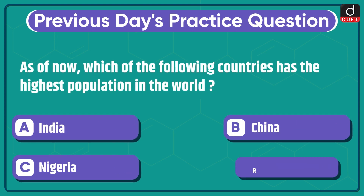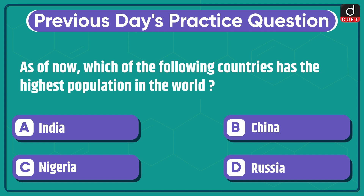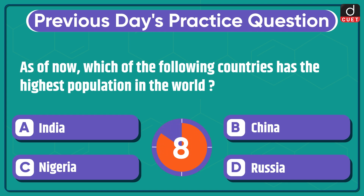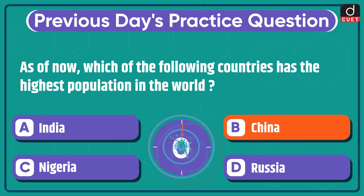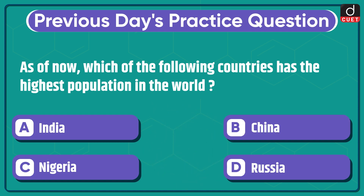The question was: as of now, which of the following countries has the highest population in the world? India, China, Nigeria, or Russia? The correct answer is option B, China.